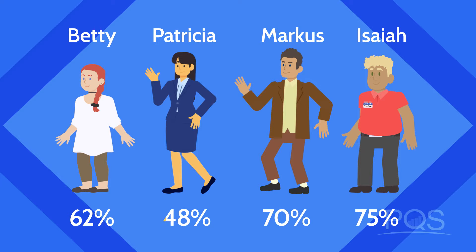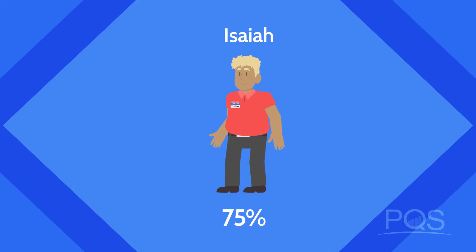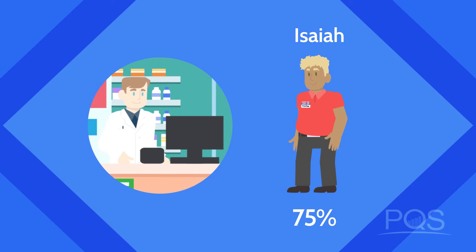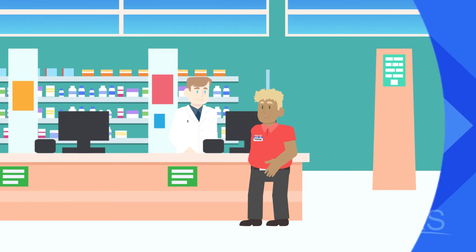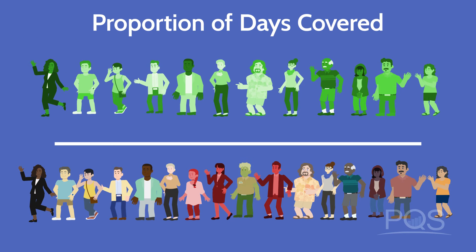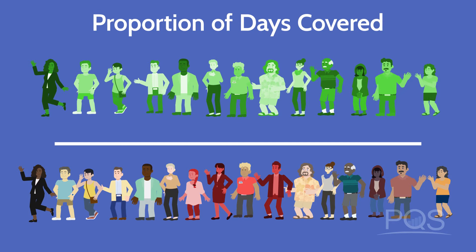Their scores are 62%, 48%, 70%, and 75%. You recognize that even with just one more fill, Betty, Patricia, and Marcus would still not be high enough to meet the 80% threshold to be included in the numerator. But if you could get Isaiah to get just one more fill, the medication adherence percentage for this population would go up. You contact Isaiah and encourage him to pick up his medication — he in turn does just that. You report it to the plan by submitting a claim, and now Isaiah officially crosses the 80% individual adherence threshold and becomes part of the numerator.